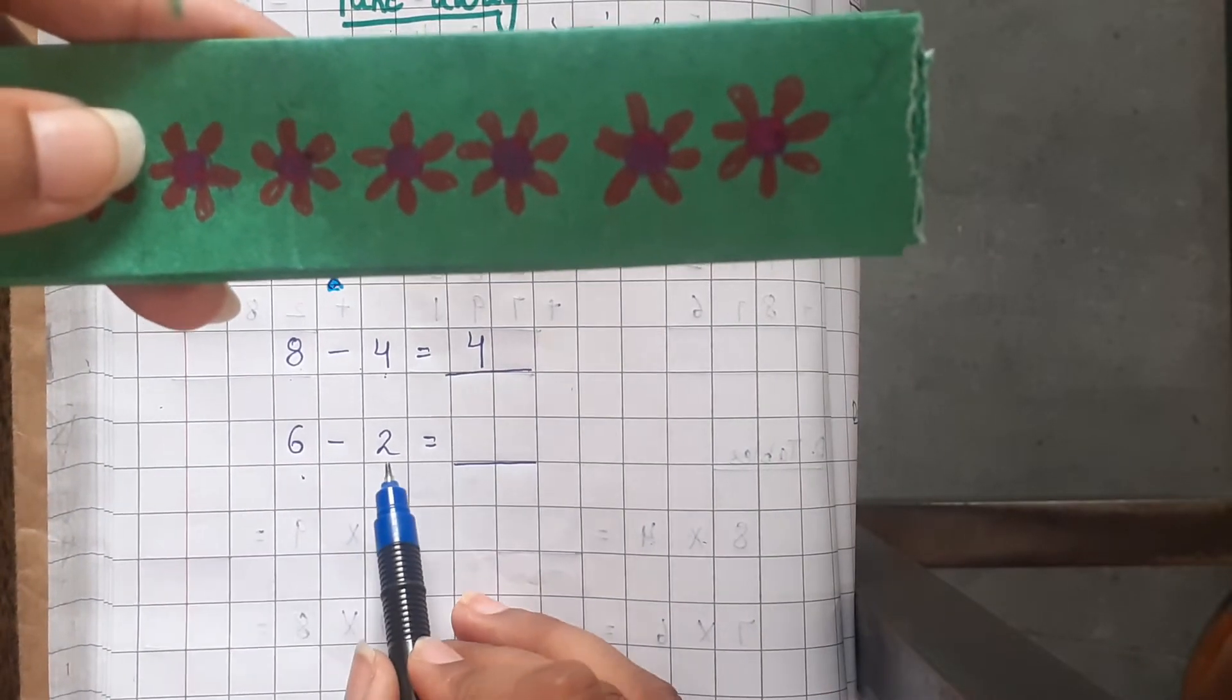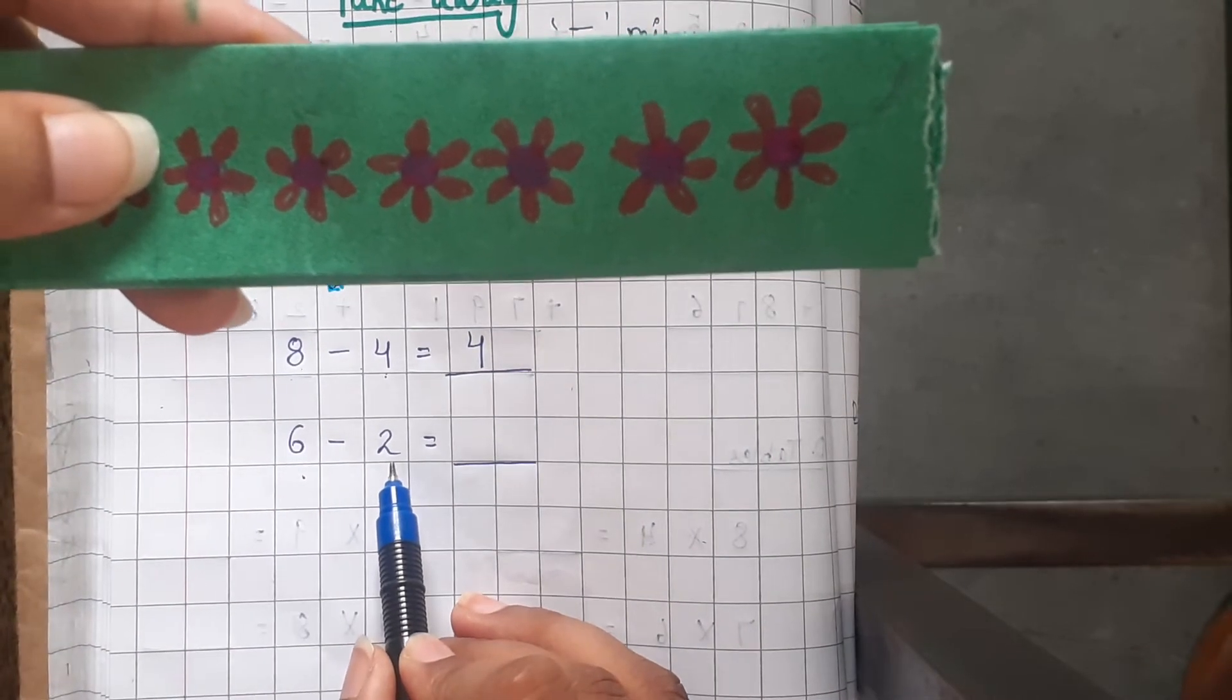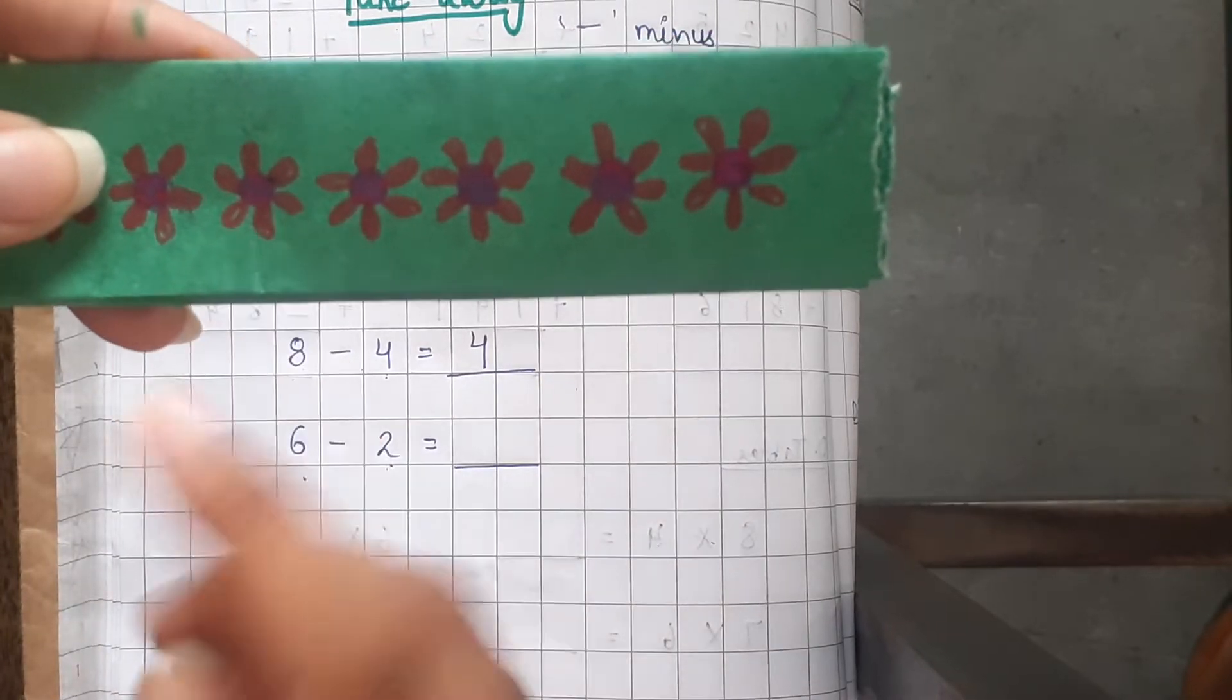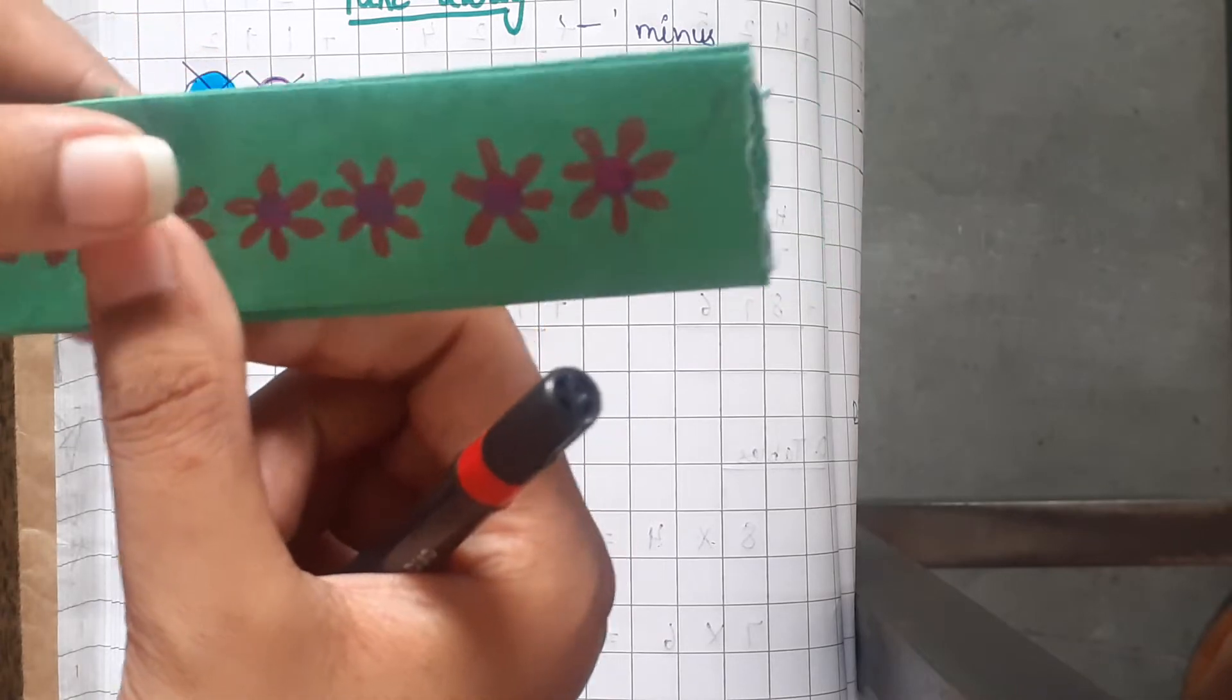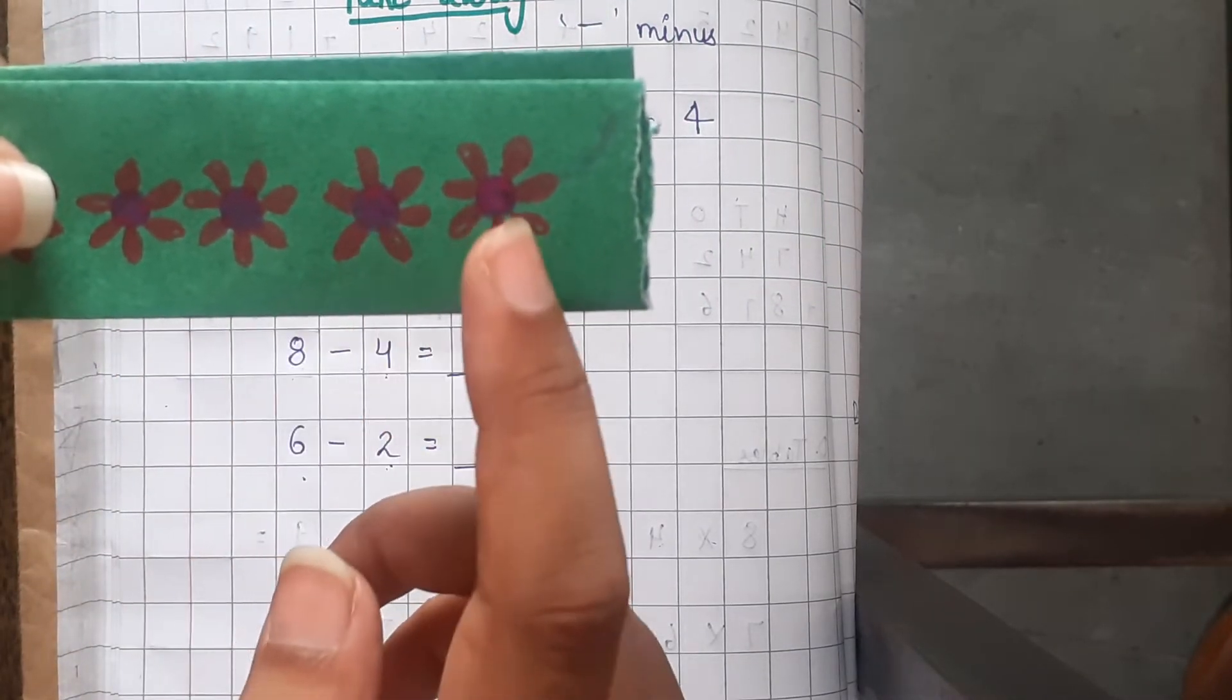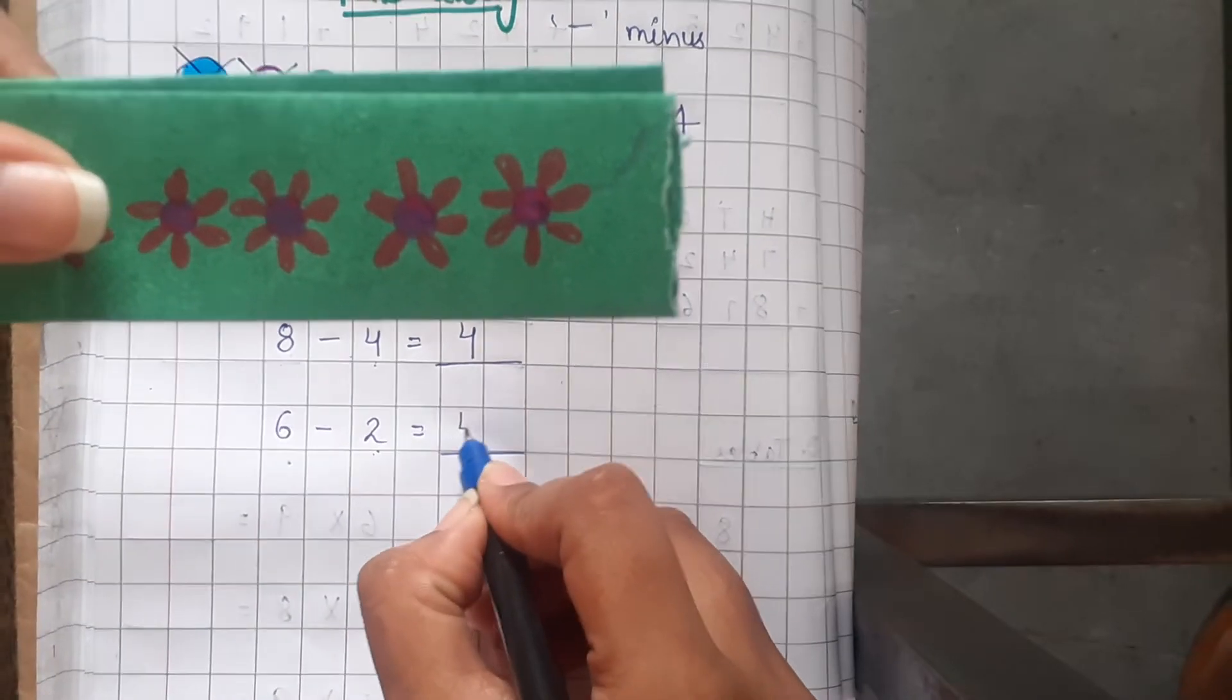Now, we have to minus or subtract or take away 2 flowers. 1, 2. So let us remove 2 flowers and 1, 2, 3, 4. 4 are left.